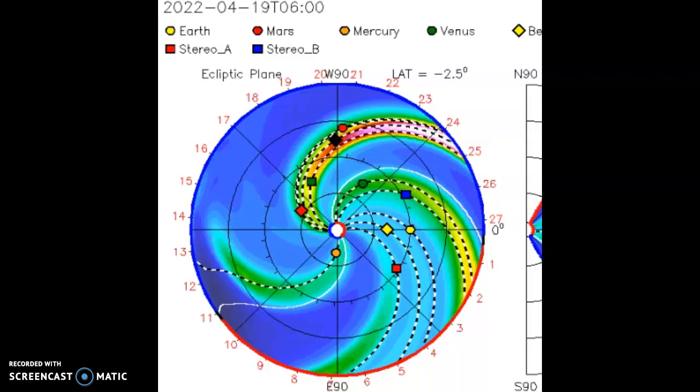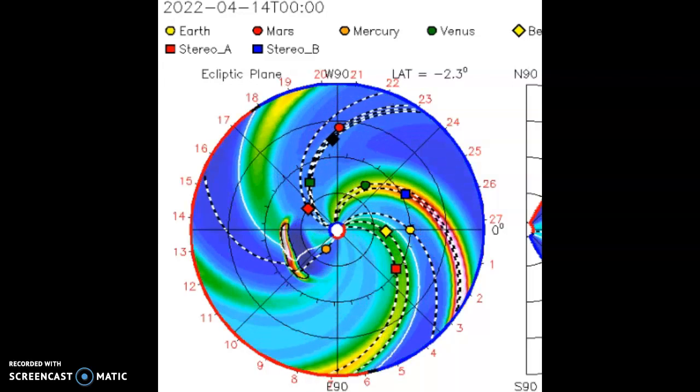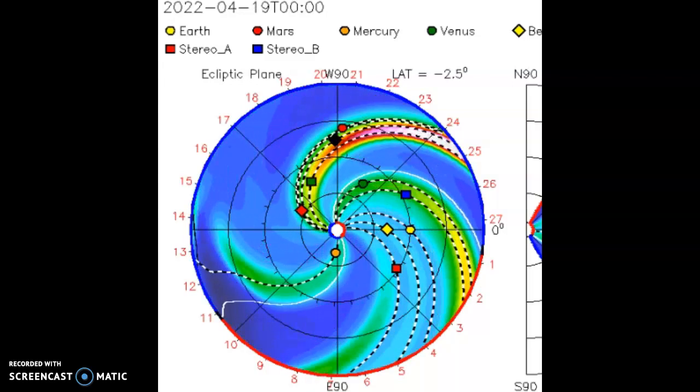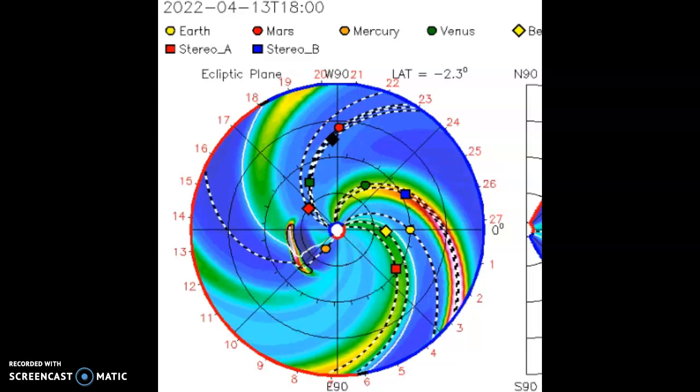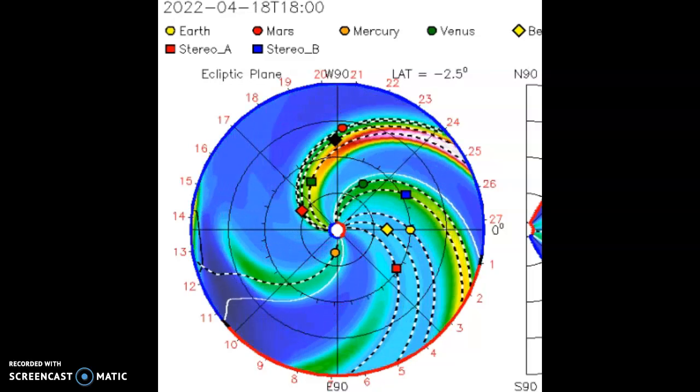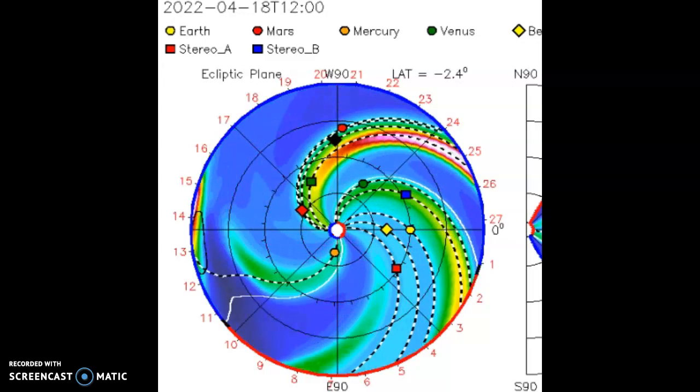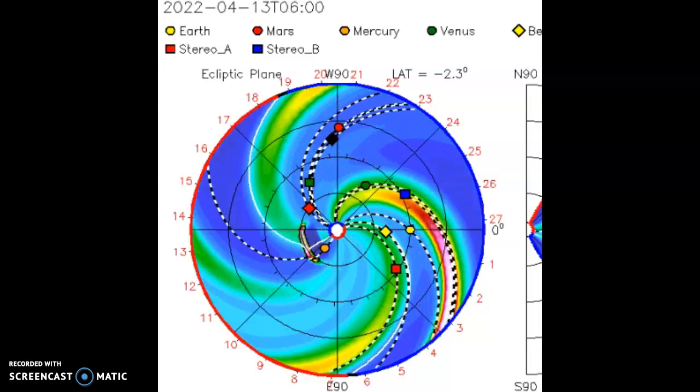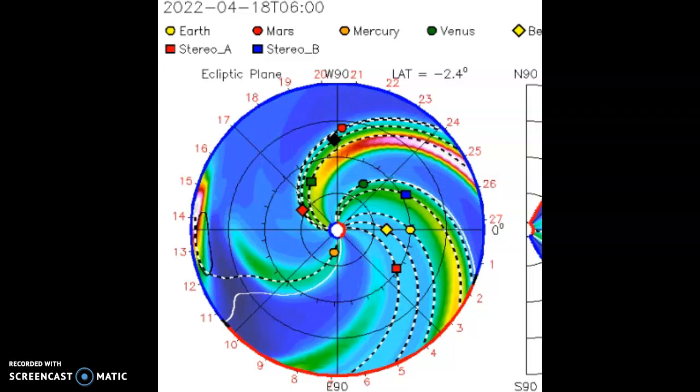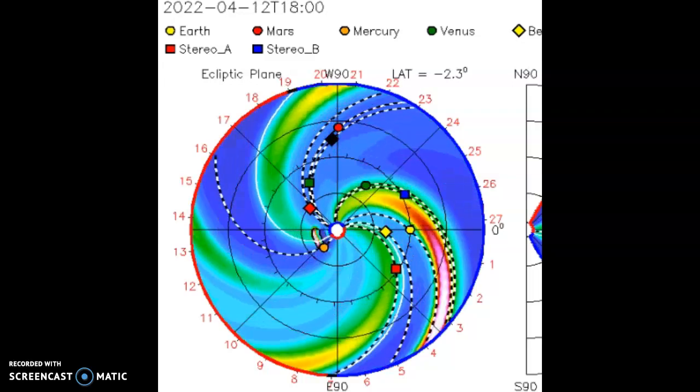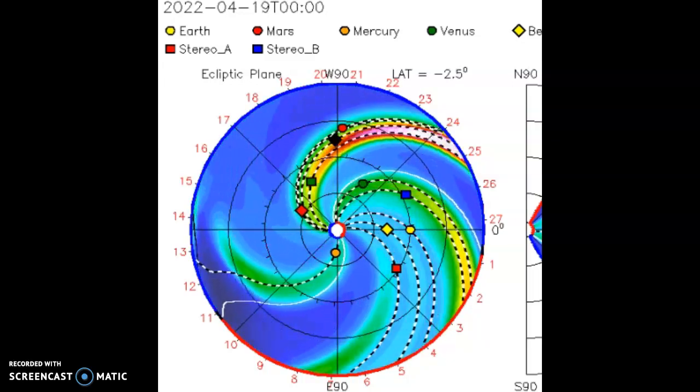We had a far side explosion on the 11th that targets Mercury. Now, what's so interesting is that is when the filament was released as well. It was a simultaneous event is what my subscribers are telling me. And it appears as if they are correct.